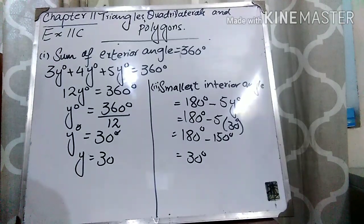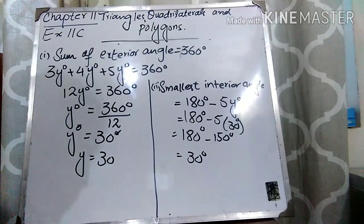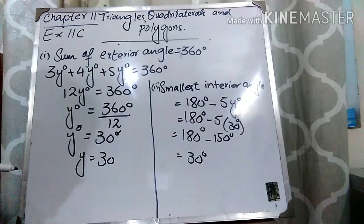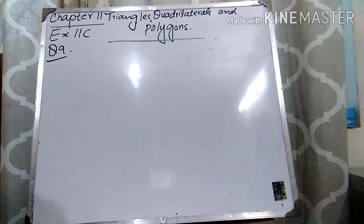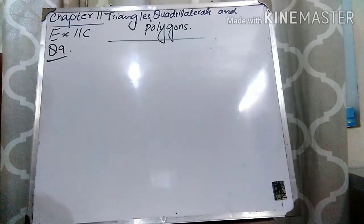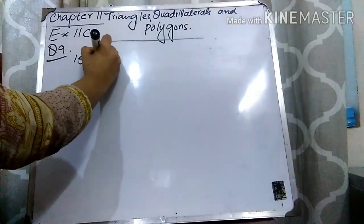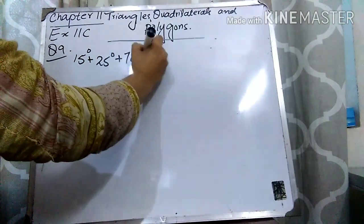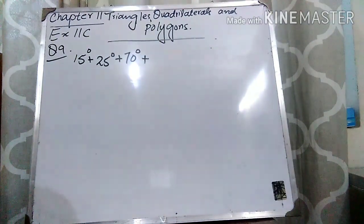I hope that concept is clear. Now let's move to question number 9. Three of the exterior angles of an n-sided polygon are 15°, 25° and 70°, and the remaining exterior angles are 50° each. Find n. Since the sum of exterior angles equals 360°, we set up: 15 + 25 + 70 + 50(n − 3) = 360°.